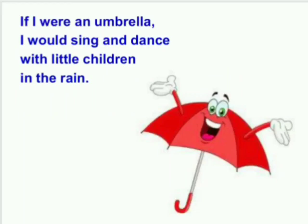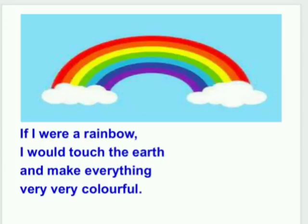Next, you have been given a picture of an umbrella. So, let's see what we can say: If I were an umbrella, I would sing and dance with little children in the rain. Children, you can make your own jingles like this. The next picture is of a rainbow. Now, let's see what we can write: If I were a rainbow, I would touch the earth and make everything very, very colorful. Now, children, you can make your own catchy lines or rhymes too.